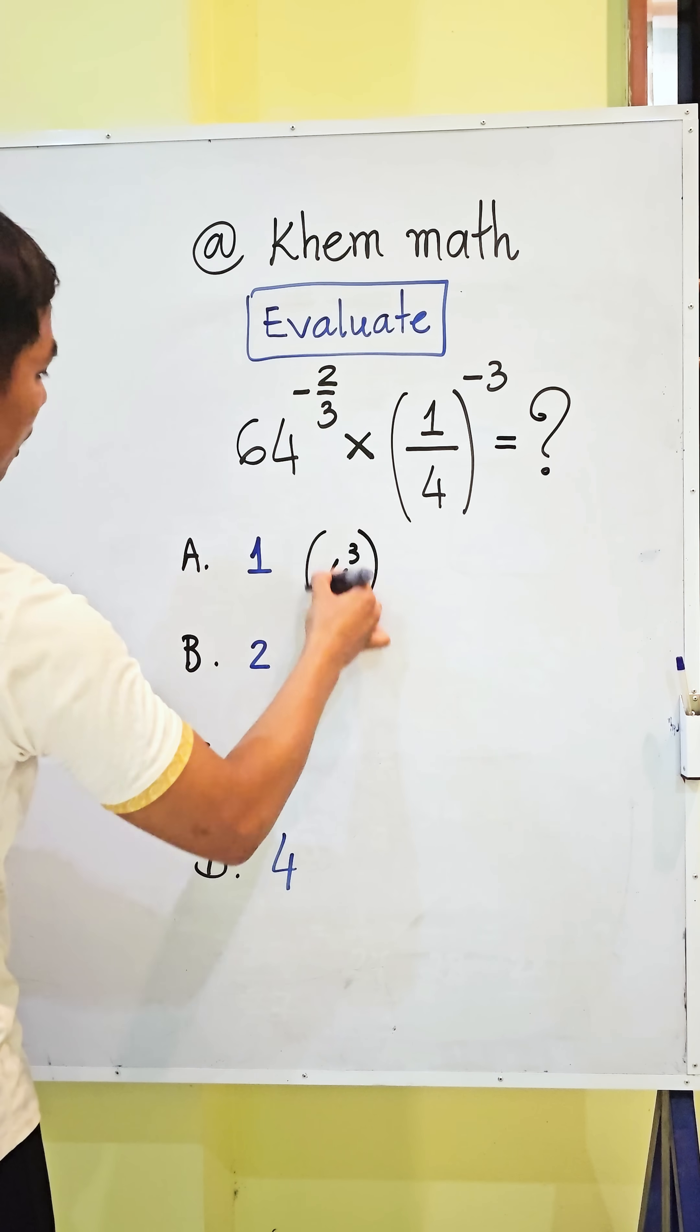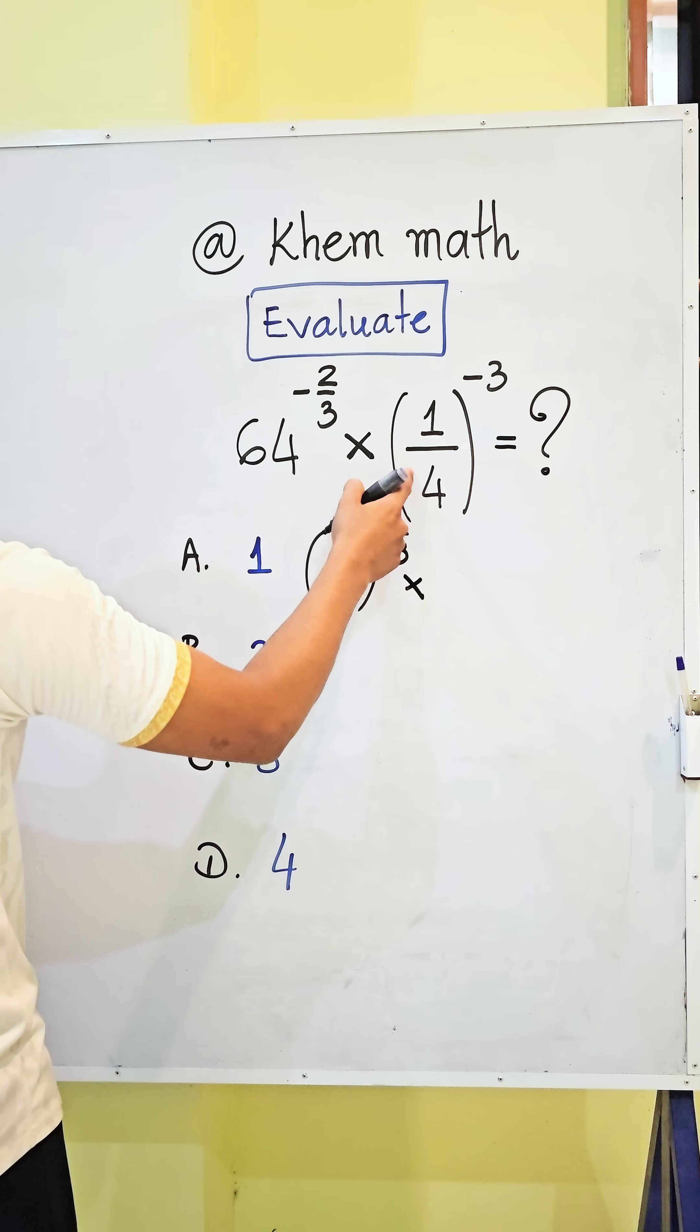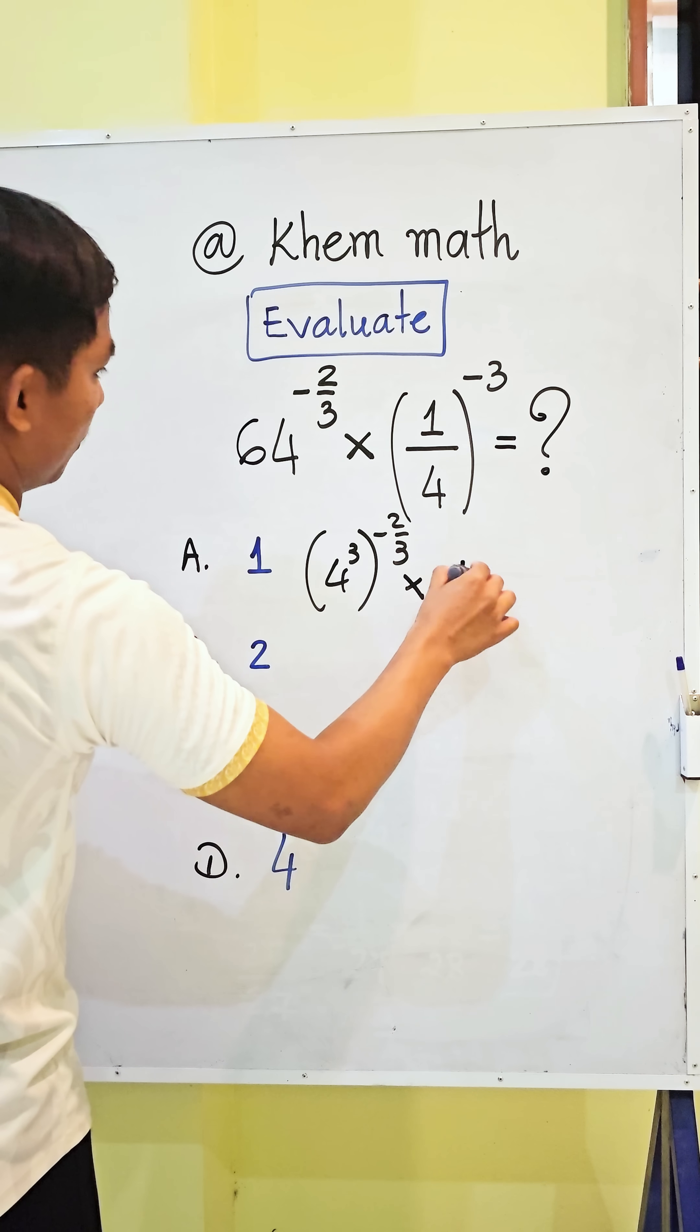And all power negative 2 divided by 3 times. Here if we change the fraction, we get the exponent is positive. So we get 4 power 3.